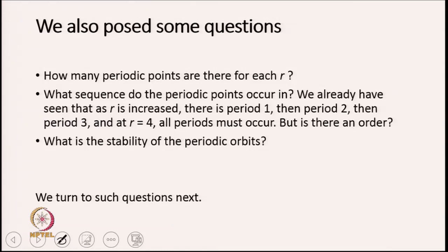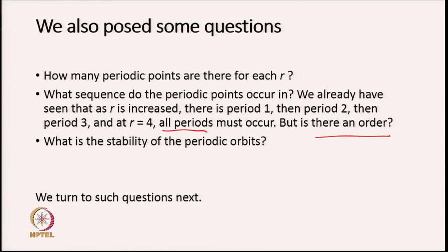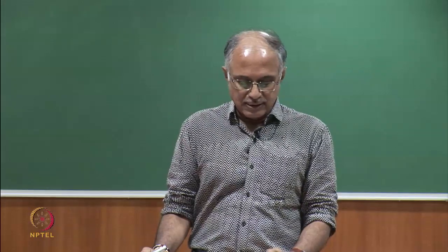A more interesting question is: what is the sequence of these periodic points? We have seen that as we increased r there is period 1, then period 2, then period 4, period 8, then period 5, then period 3, and at r equals 4 all periods must occur — but is there any order? And what is the stability of these orbits, because this will tell you whether you can find them easily or not?